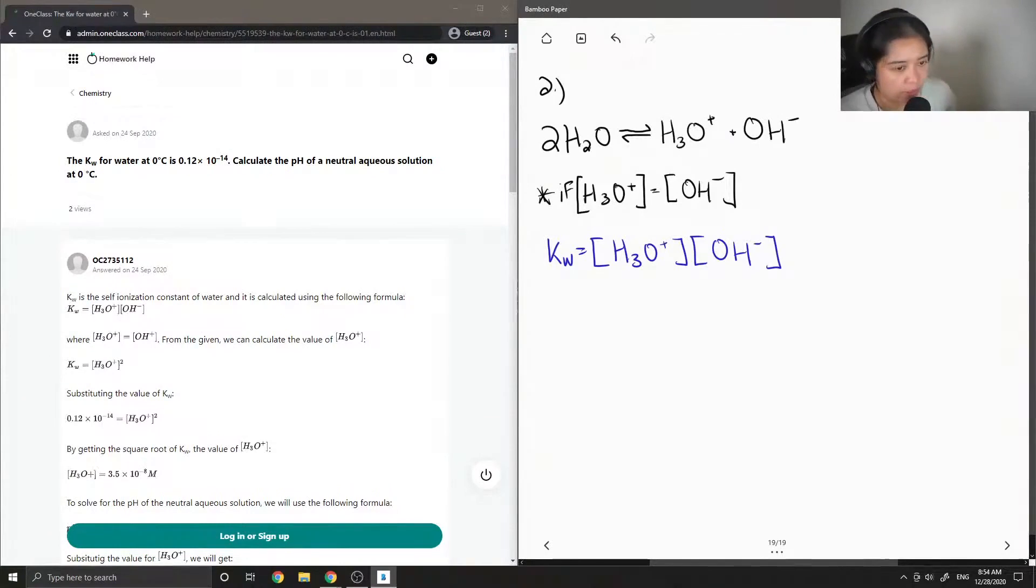Okay so like I mentioned earlier, if those two values are the same then we can rewrite this expression as Kw is equal to the concentration of H3O plus but squared.